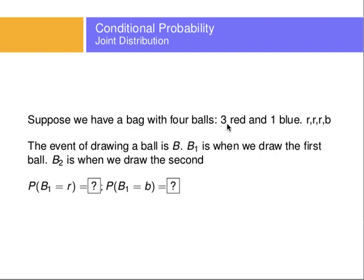Here's an example to illustrate joint and conditional probabilities. Suppose we have a bag with 4 balls: 3 red and 1 blue. The event of drawing a ball is B. B1 is drawing the first ball, B2 is drawing the second ball. The probability that the first ball is red is 3 out of 4, so 3 over 4. The probability that it's blue is 1 over 4, because there's only one blue ball out of 4 in the bag.